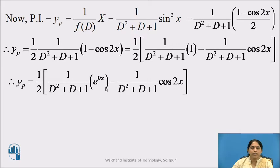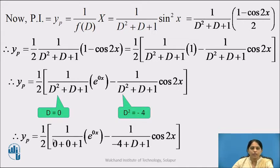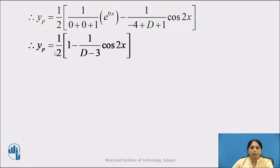Using the case of e^(ax) for the first term and the case of cos ax for the second term: for e^(0x), replace D by 0; for cos 2x, replace D² by −4. So yp = (1/2) · [1/(0 + 0 + 1) · e^(0x) − 1/(−4 + D + 1) · cos 2x]. Since 1/(1) · 1 = 1, we get yp = (1/2) · [1 − 1/(D − 3) · cos 2x].